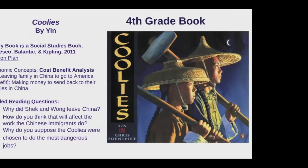Some guided reading questions: Why did Shek and Wang leave China? How do you think that will affect the work the Chinese immigrants do? Why do you suppose the coolies were chosen to do the most dangerous jobs? Unlike the kindergarten and first grade books, this book has a lot of truth to it. There were Chinese immigrants who came to America to work and had to suffer and do really hard jobs because it was a better life, but there was a cost and a benefit — they had to go away from their families. This really gets kids to bring in that historical perspective as well as those economic concepts.